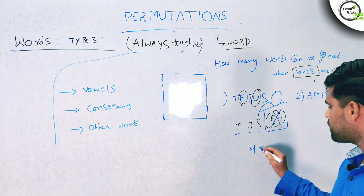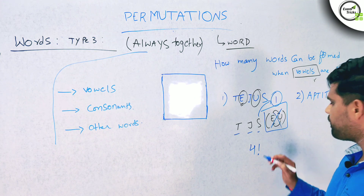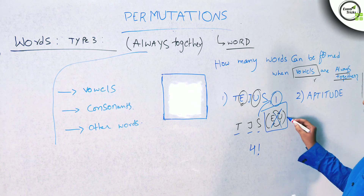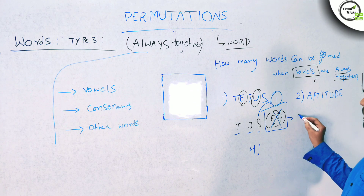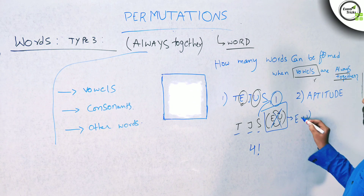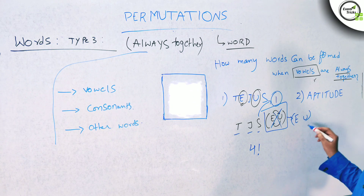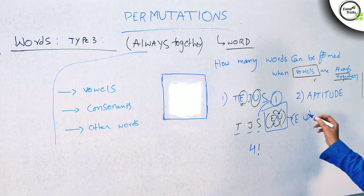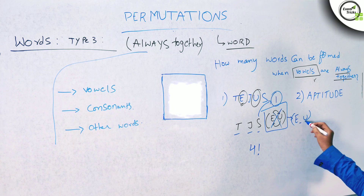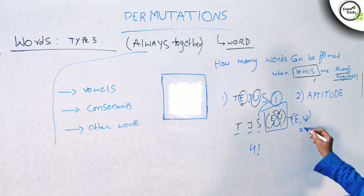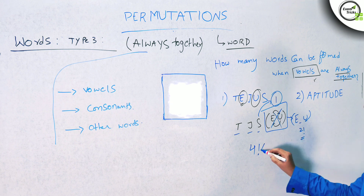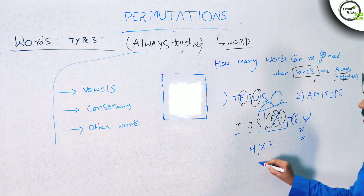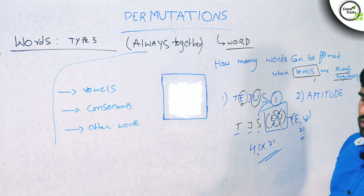You can arrange four letters in four factorial ways. And you can arrange the two vowels within the block in two factorial ways. So the answer is four factorial into two factorial.